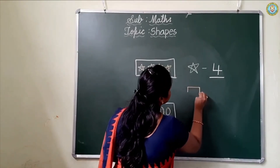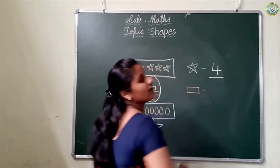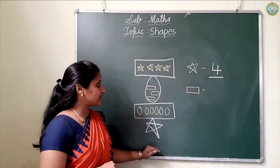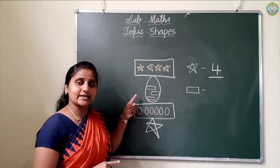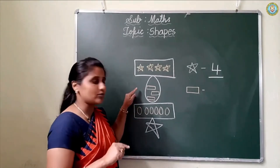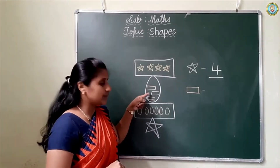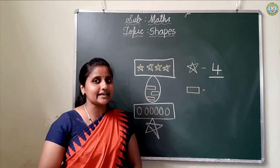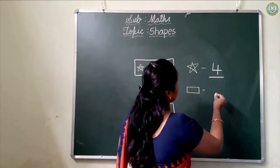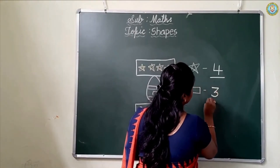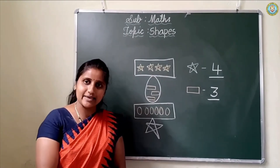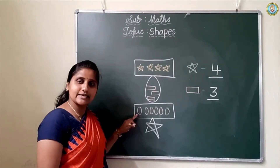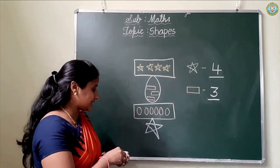Which shape is this, children? Rectangle. Which shape is this? Rectangle. Count the rectangles: 1, 2, 3. How many rectangles are there? There are 3 rectangles.